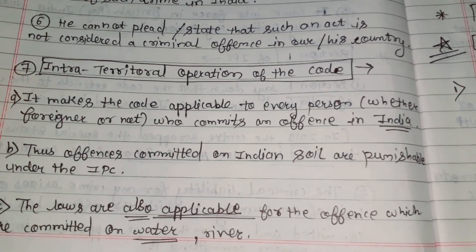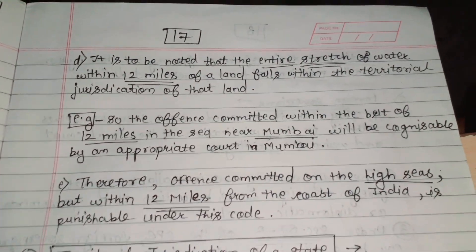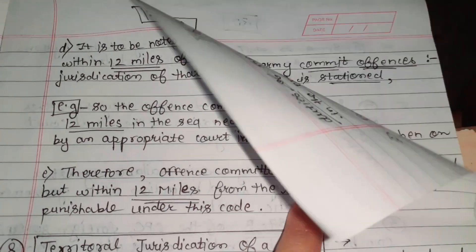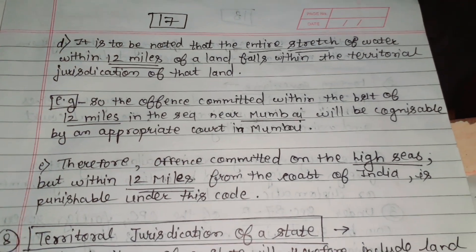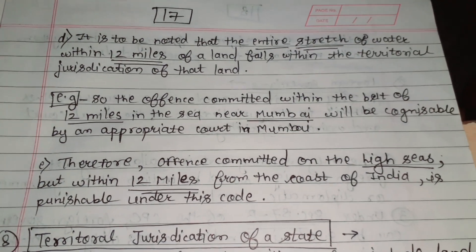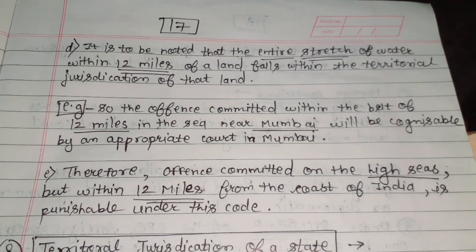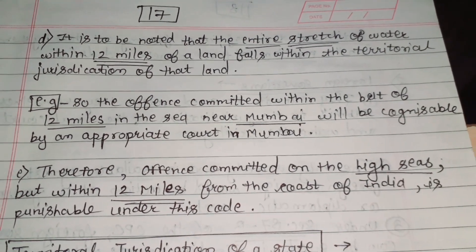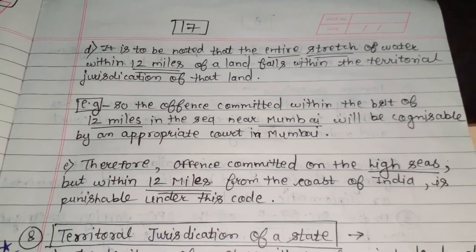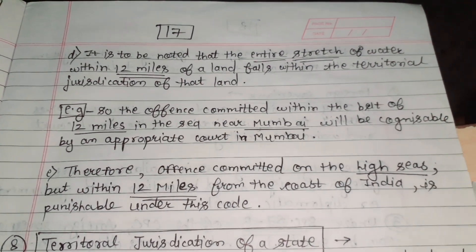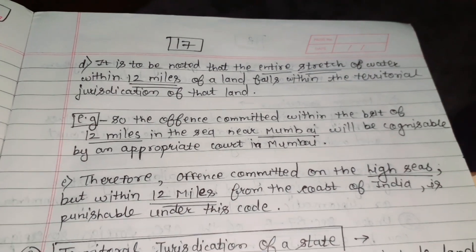This is the intra-territorial operation of the code. It also applies to offenses which are committed on the high seas, but within 12 miles from the coast of India — those are punishable under this code.